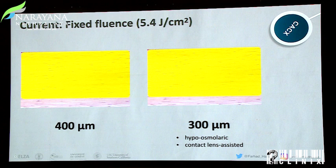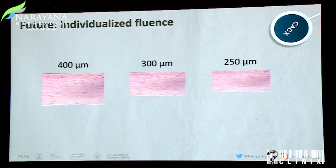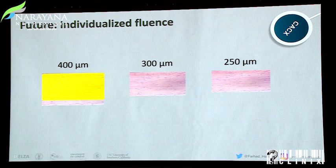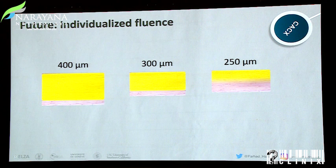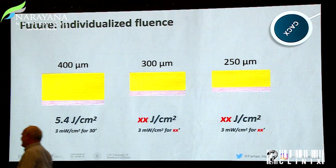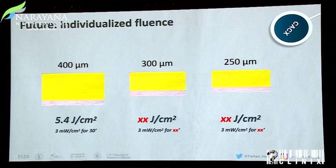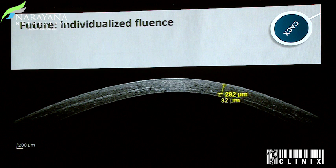Is there any other means to overcome this issue? We think there is: we need to individualize the fluence. On the left is the Dresden protocol — the 5.4 joule — and we adapt the fluence to every corneal thickness. By doing so, we need to understand how many minutes to apply for any given intensity. This algorithm was created by us and published almost three years ago. We have clinical data with a two-year follow-up to be presented at ESCRS this year. As you can see in one case, the demarcation line is at a nice depth and stops before the endothelium — this was a 360 micron cornea: no swelling, no contact lens, just adapting the energy.